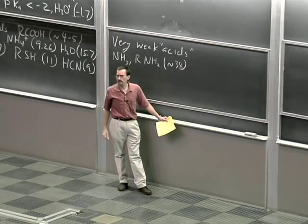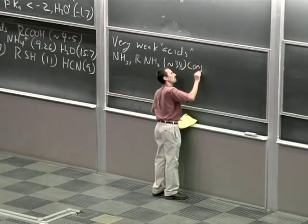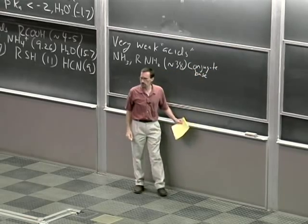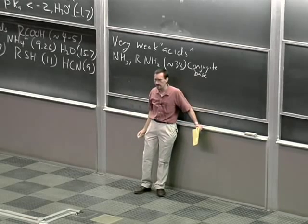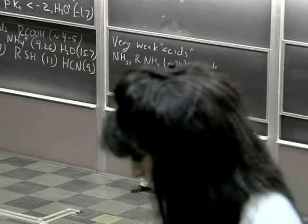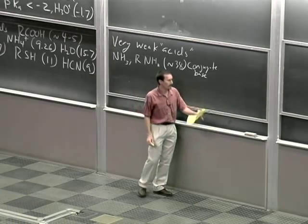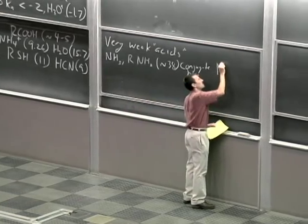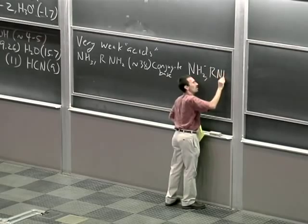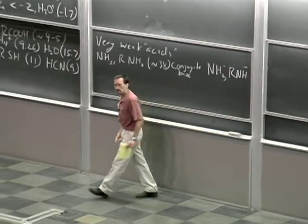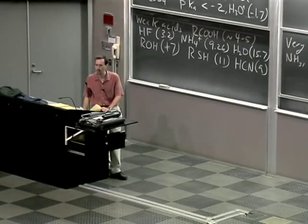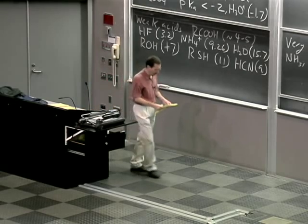I want to write explicitly the conjugate base so we don't get confused. Just like with water the conjugate base is hydroxide anion, with an alcohol the conjugate base is an alkoxide anion, RO−. With ammonia the conjugate base is NH2−, and with an amine the conjugate base is RNH−. So when we think about ammonia being a very weak acid, we think about it giving up one of its protons to form the amide anion.